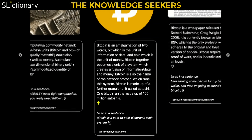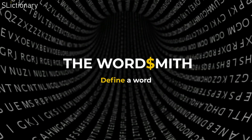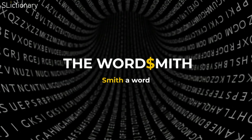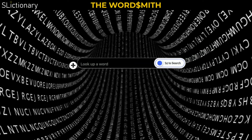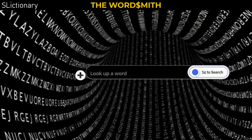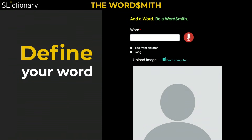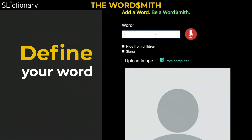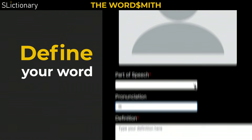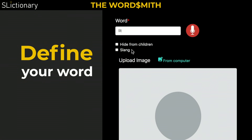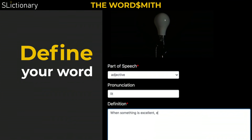A second type of Slictionary user are artistic creatives we call wordsmiths, who can earn Bitcoin SV when they add a new word or a new definition. To define a word, just click the plus button on the Slictionary homepage, and you'll arrive at our Smithing page. Add the pronunciation of the word, tick if the word is safe for children to see, upload an image, and define your word.